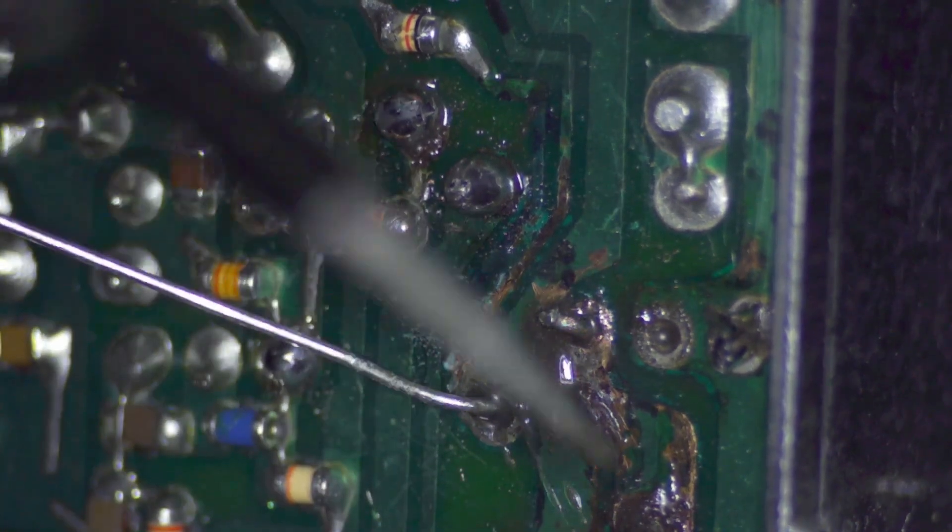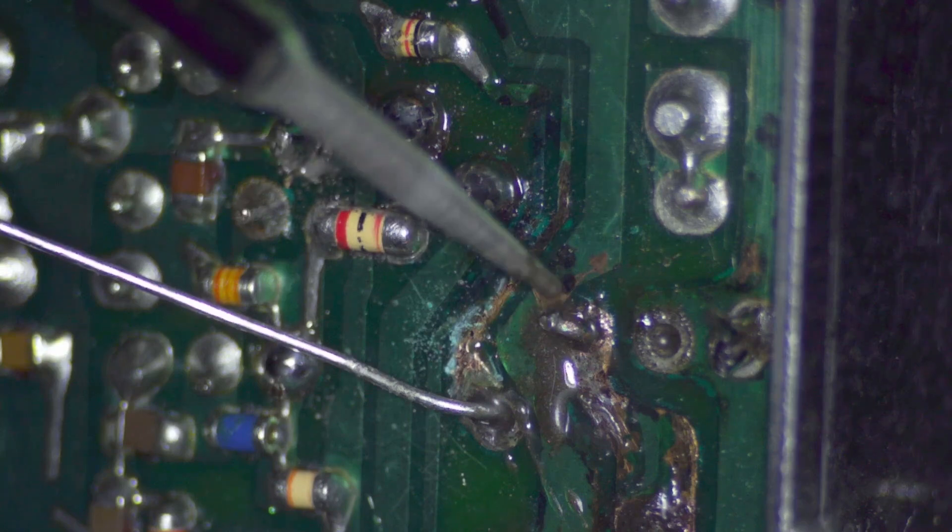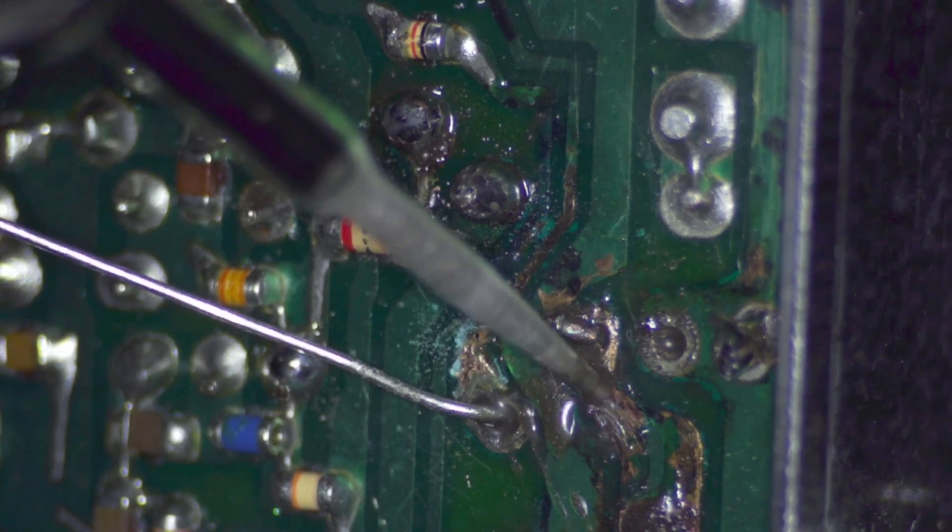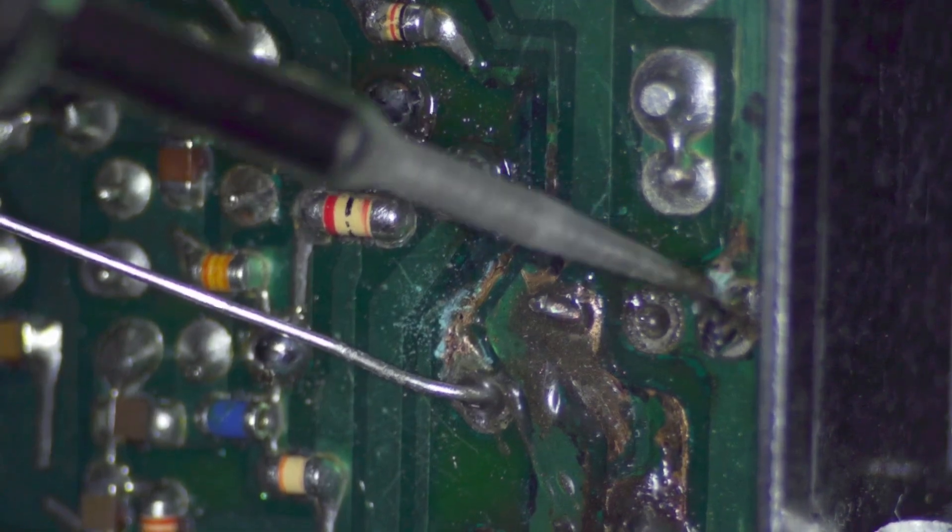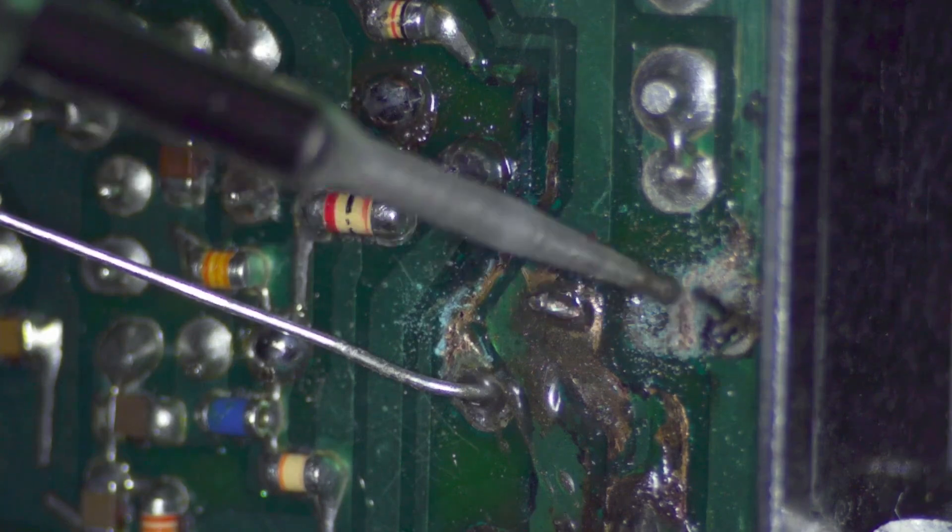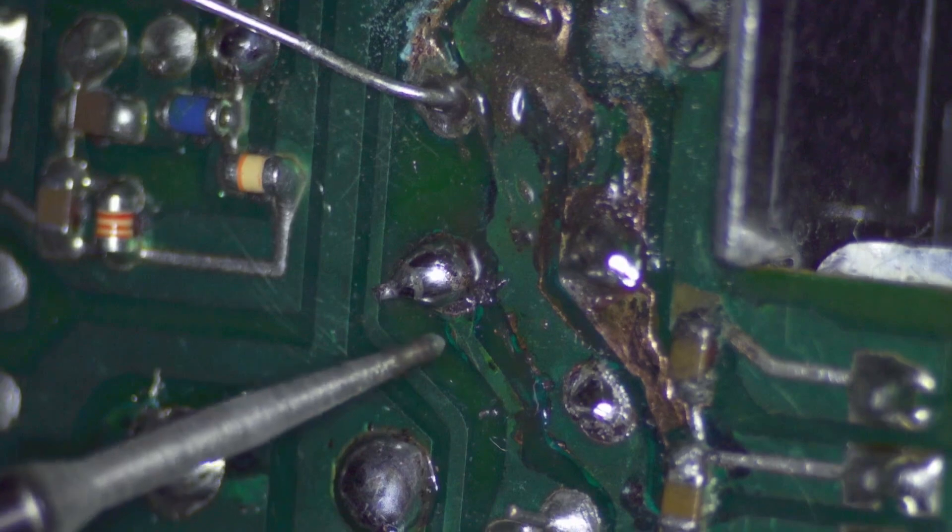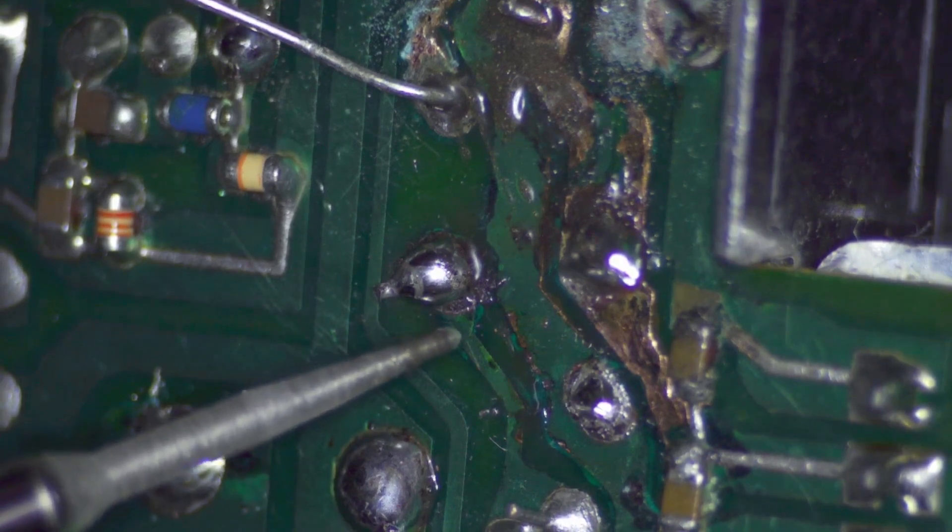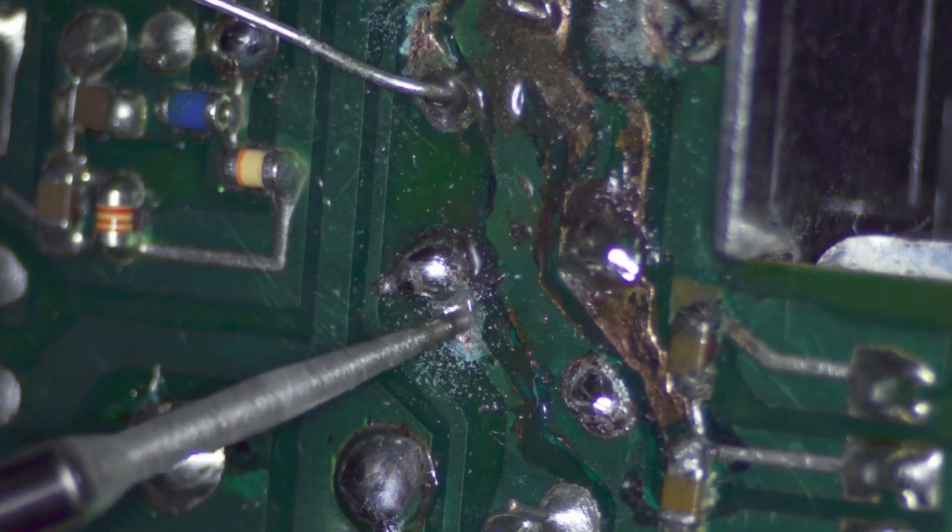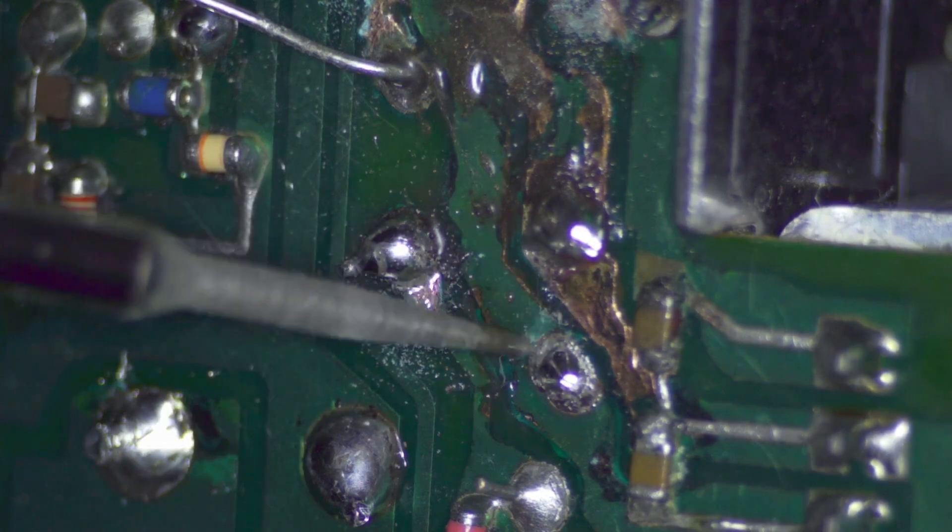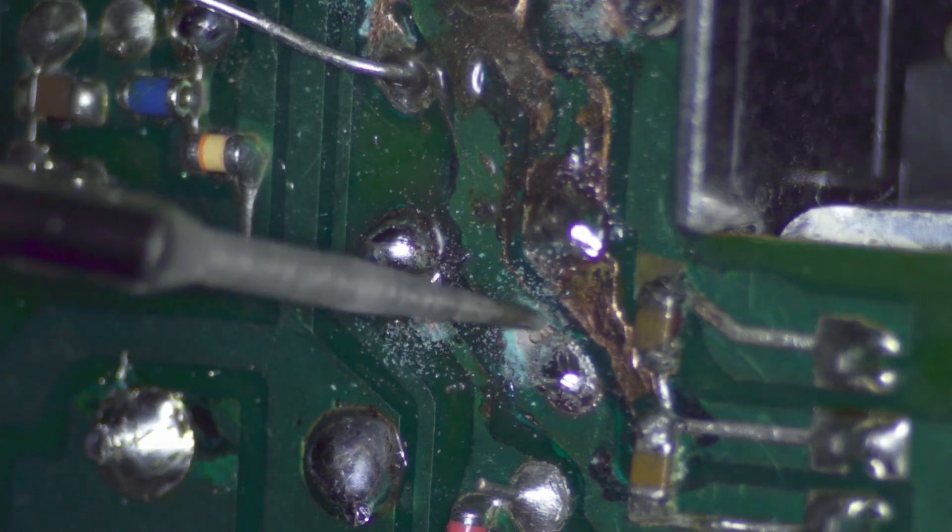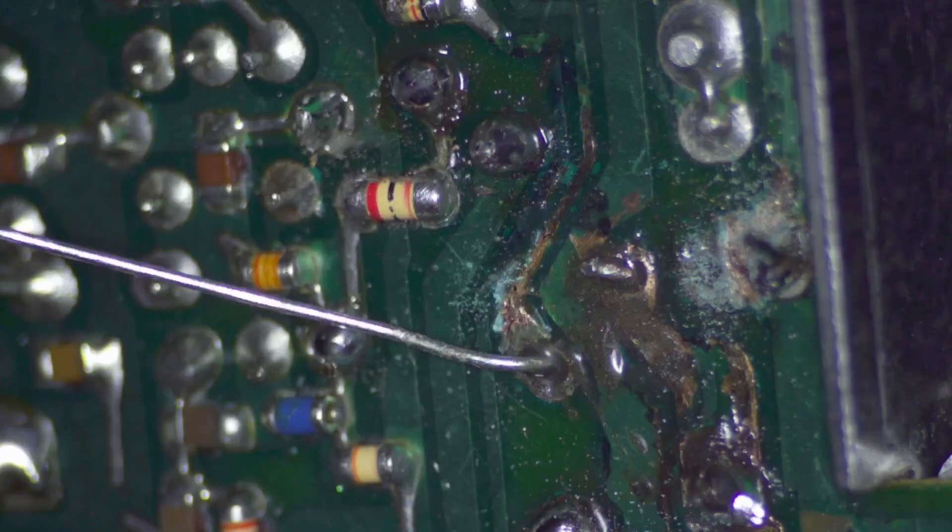Now, we do have to be careful because we do not want this to bridge this larger pad. So I don't believe they connect. Just to make sure we have a good bond, we'll expose some meat on these other traces. That way we can just touch up these joints.